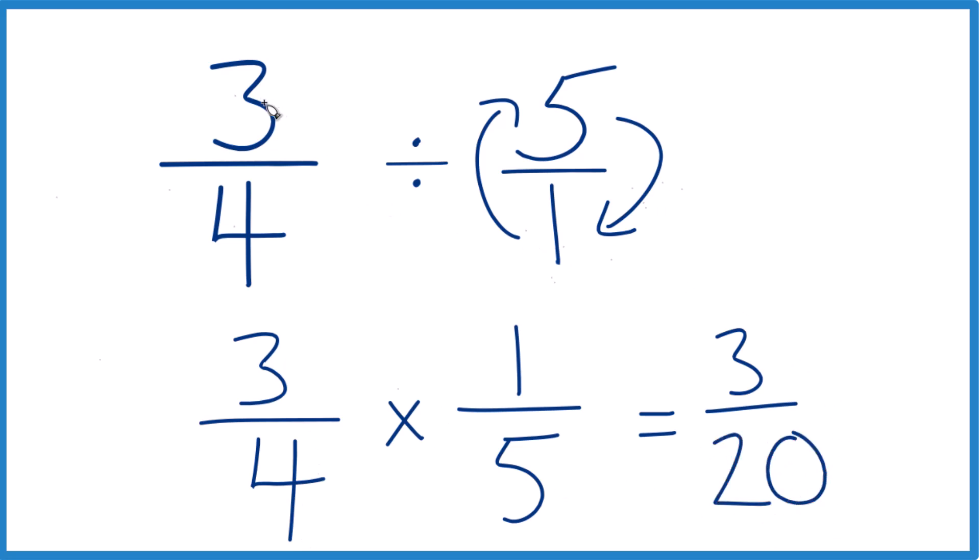So in answer to our question, 3 fourths divided by 5, or you could say 3 fourths times 1 fifth, we get 3 20ths.